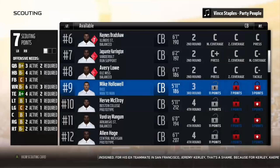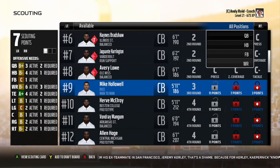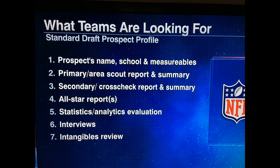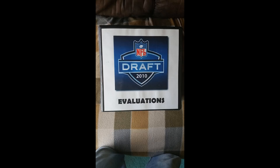Before getting to the mock-ups, I want to hit on a few things that can serve as templates for a scouting system. First is something from NFL Live featuring Bill Polian, a Hall of Fame GM. It's a standard draft prospect profile with the obvious stuff like name, school, and measurables, and then things like the primary area scout report, secondary cross-check, all-star reports, statistical evaluation, interviews, and intangible review. Outside of the interviews, I think all of that would translate well into Madden's scouting system.